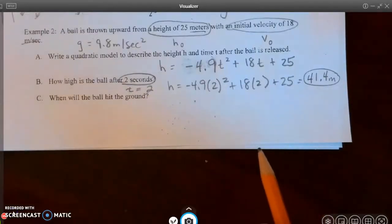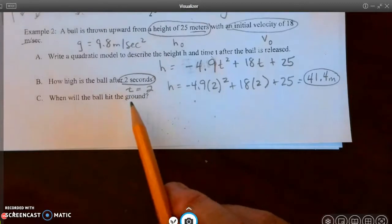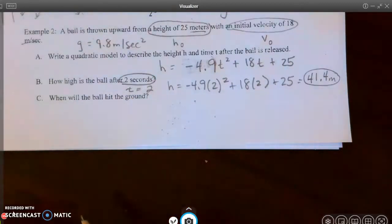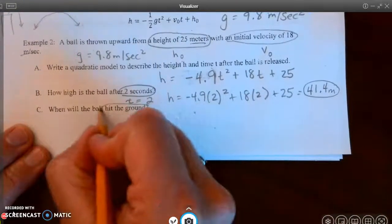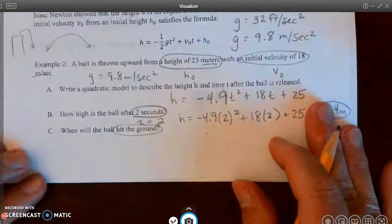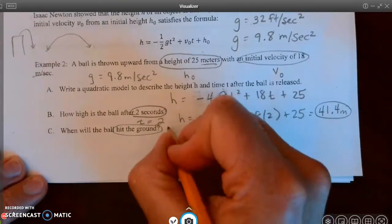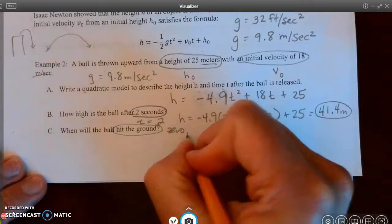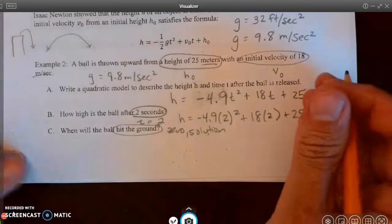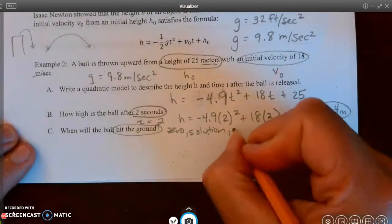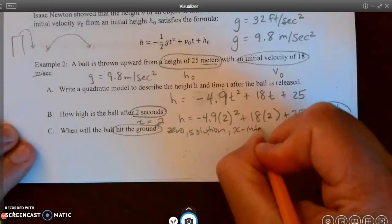All right, so now the last question asks, when will the ball hit the ground? So whenever we're asked when something will hit the ground, you've got to realize that hitting the ground is like finding a zero or a solution, because the x-axis is like the ground, or we can think of it as x-intercepts.